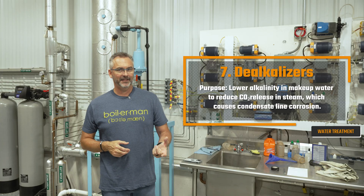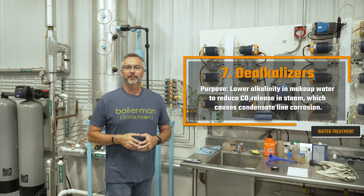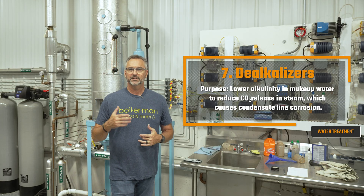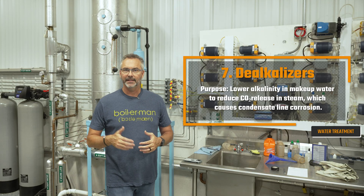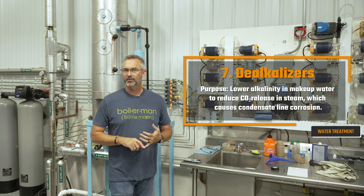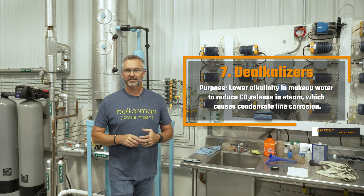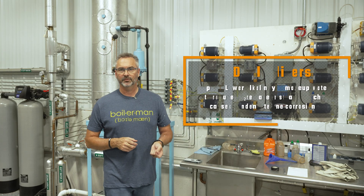Number seven is dealkalizers — acid neutralizers. Their purpose is to lower alkalinity in makeup water to reduce CO2 release in steam, which causes condensate line corrosion.